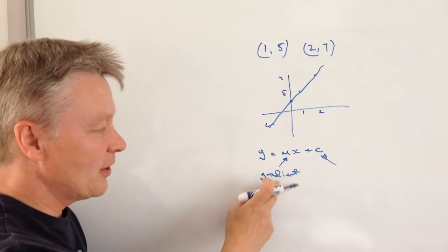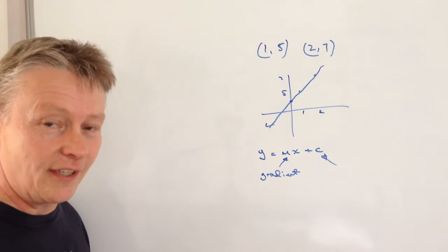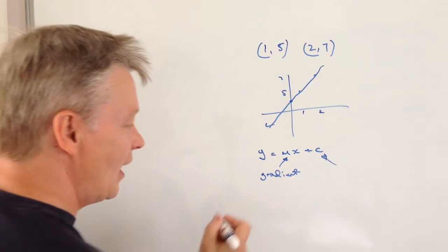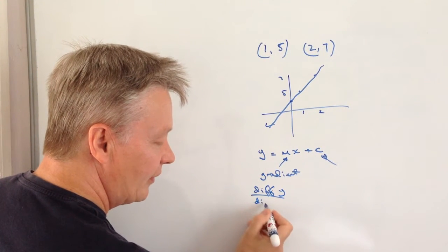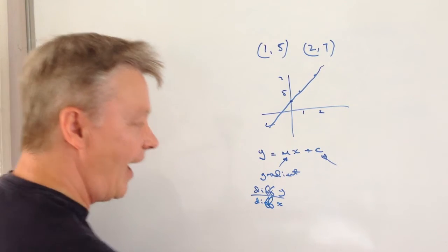Okay, so the first thing we're going to do is we're going to work out the value of the gradient. Now the easiest way of doing that is difference in y divided by difference in x.